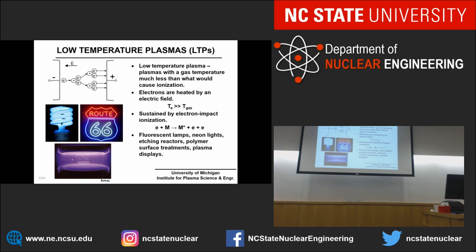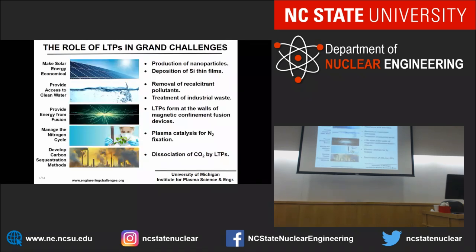Common examples of low temperature plasmas include lighting, fluorescent light bulbs, and neon signs. They're also used throughout industry — including in most steps of semiconductor processing and treating many surfaces of household products like scotch tape. I want to explain why they're important by going through the National Academy's list of grand challenges and highlighting areas where low temperature plasmas could help.